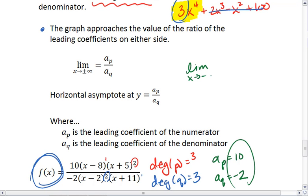So the limit as x goes to negative infinity will be 10 over negative 2, which is negative 5. And the limit as x goes to positive infinity will also be 10 over negative 2, which is negative 5. This gives us a horizontal asymptote at y equals negative 5.